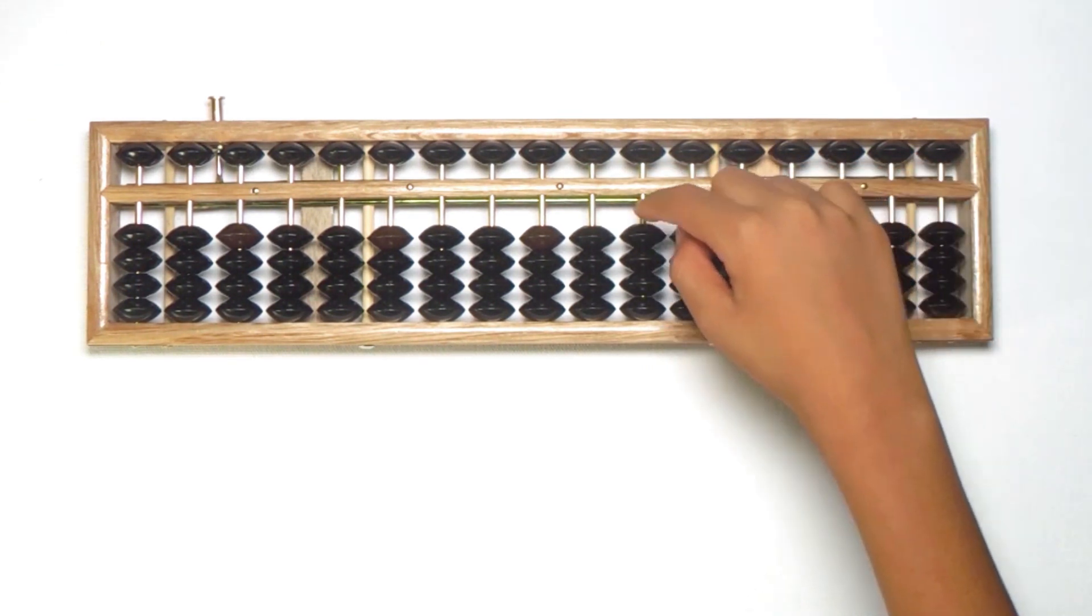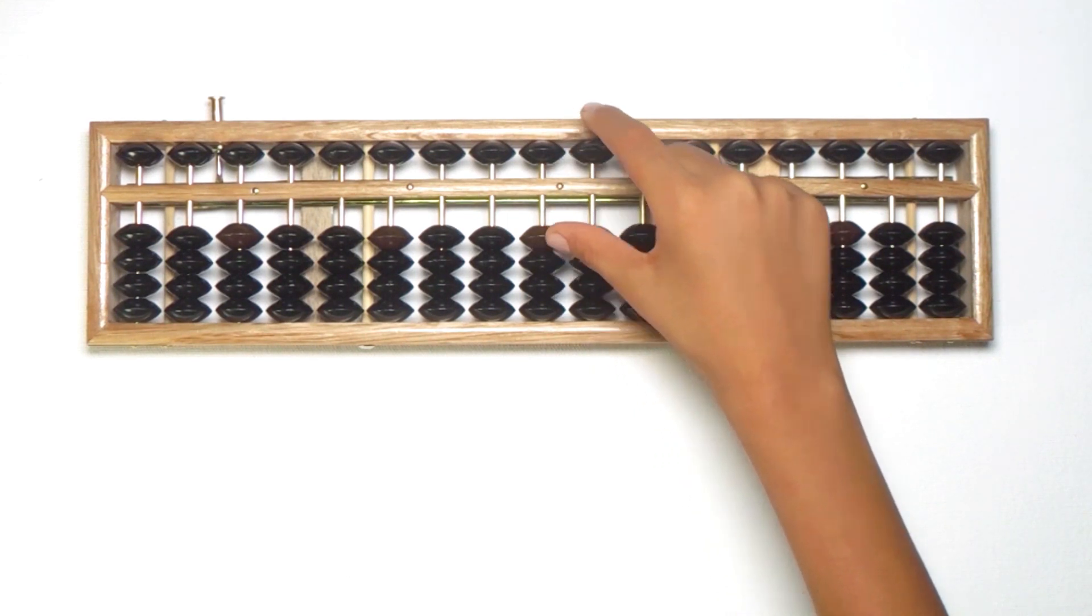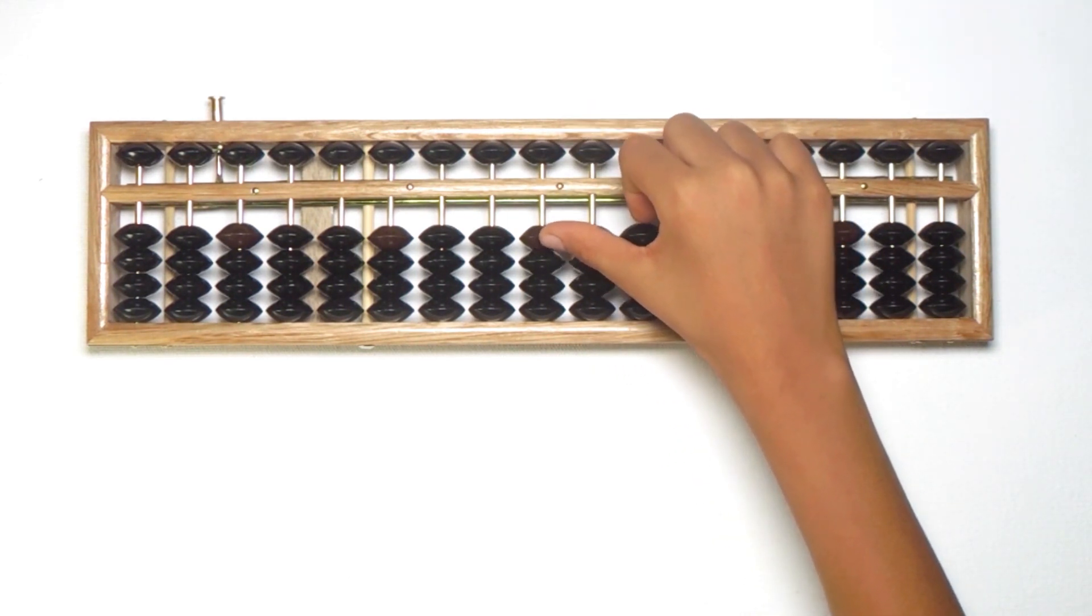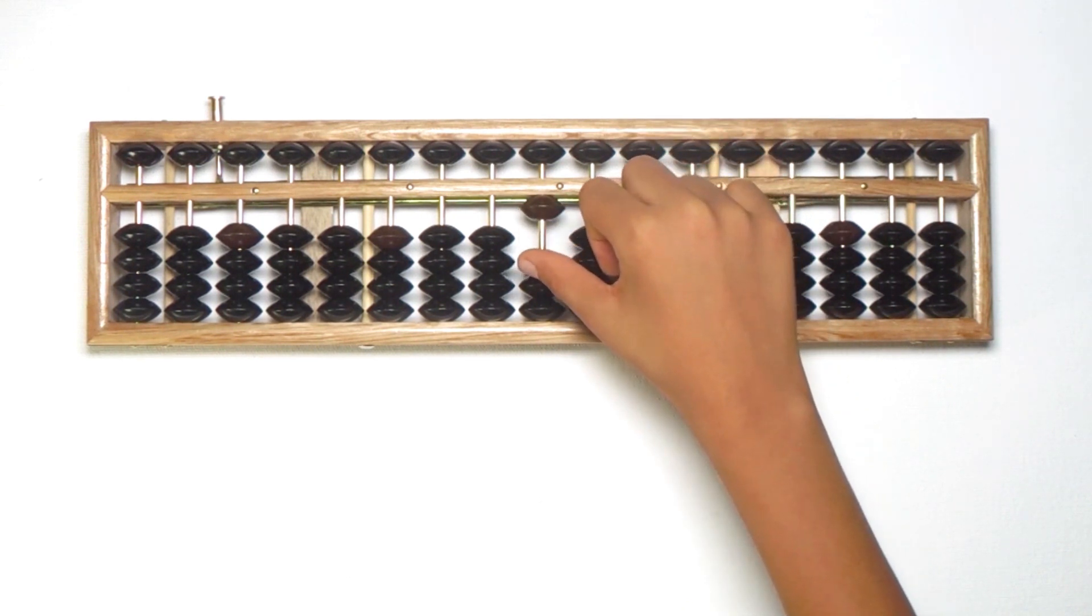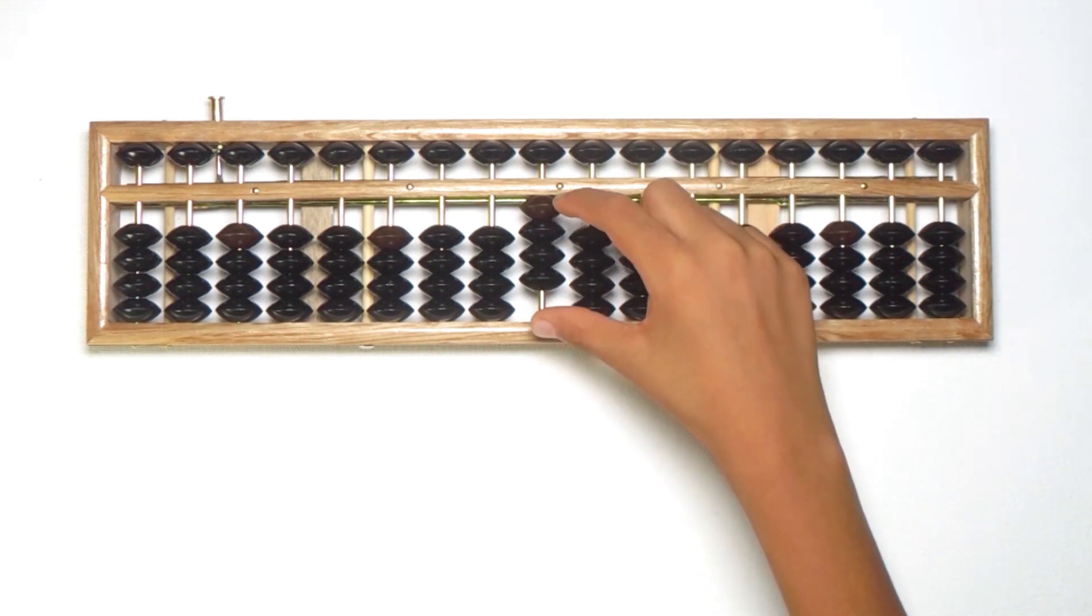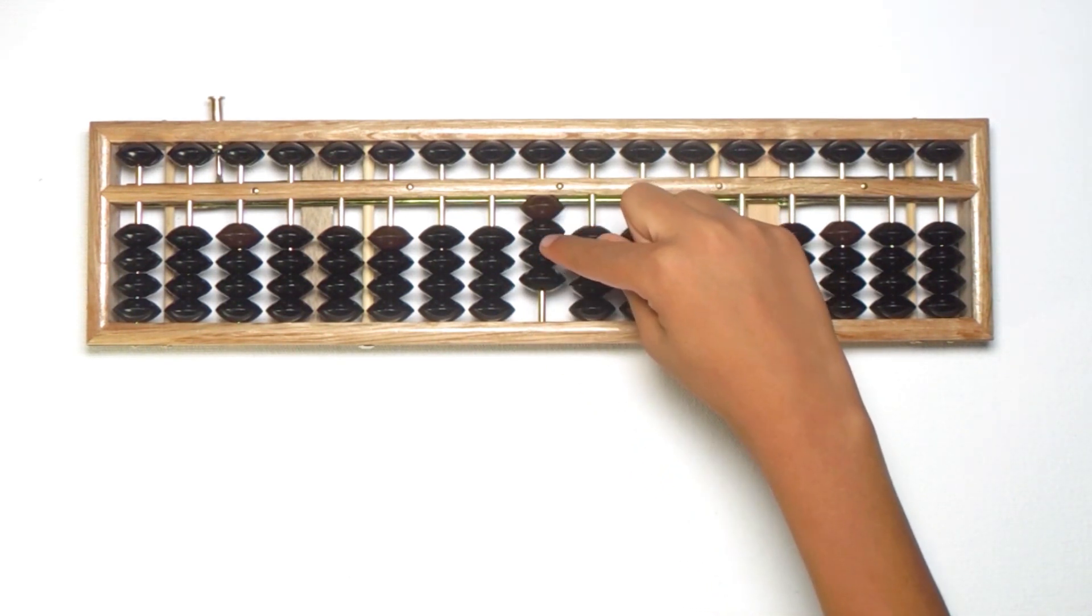Now we shall start counting one. We shall move one earthly bead up from unit place. This is one. Now let's do two, three, four. You can see all four beads we pushed towards the reckoning bar.